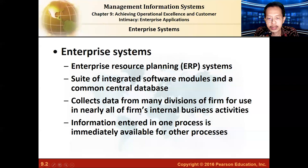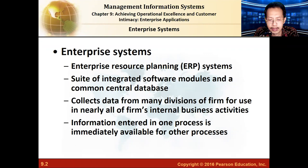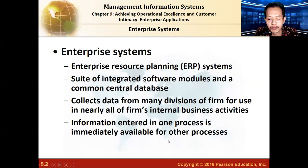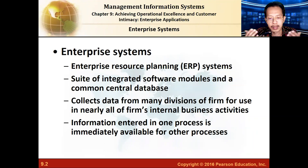First, let's take a look at enterprise systems. Enterprise systems can be named with different names, like enterprise resource planning systems. Basically, the system is integrated software that uses a common central database. It takes data from different divisions and uses it for all business activities in a company. Once data is inputted into one part of a company, it becomes available for other processes — it's integrated, uses one central database shared across the whole company, and is automatically accessible.